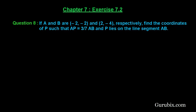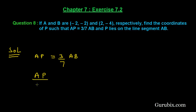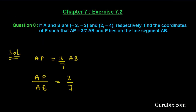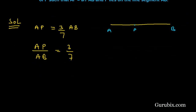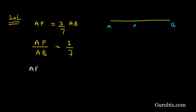This is a very interesting question. We are given that AP equals 3/7 of AB, which means AP over AB equals 3/7. Now we shall draw a line segment AB with point P on it, and write AB as AP plus PB.